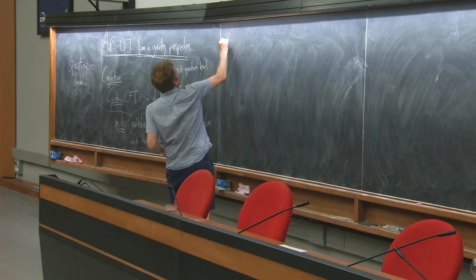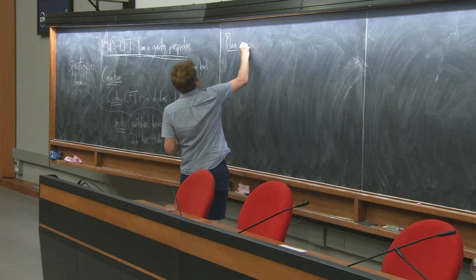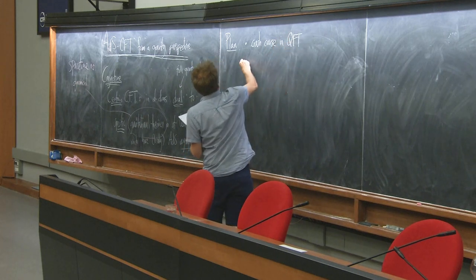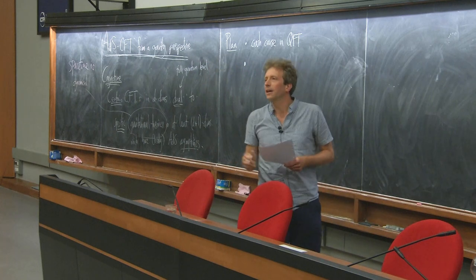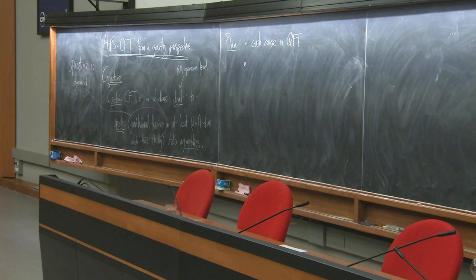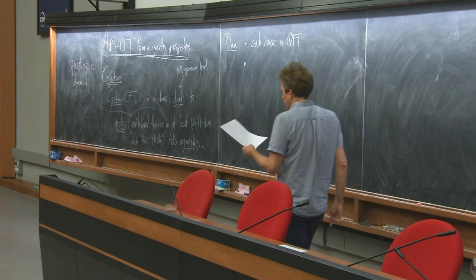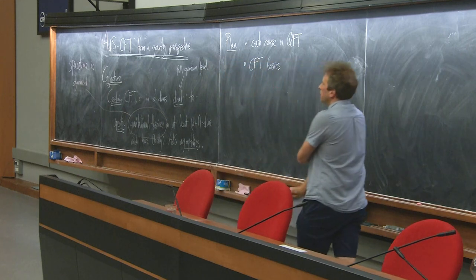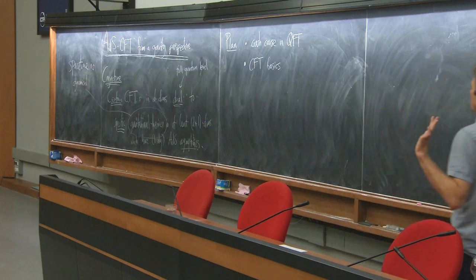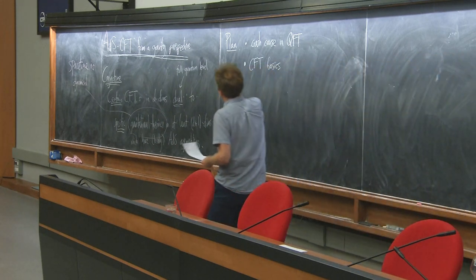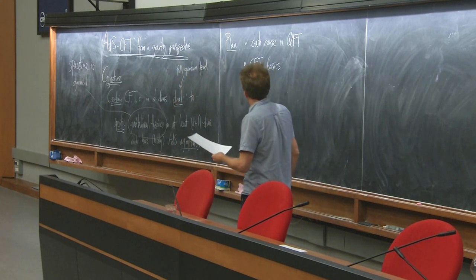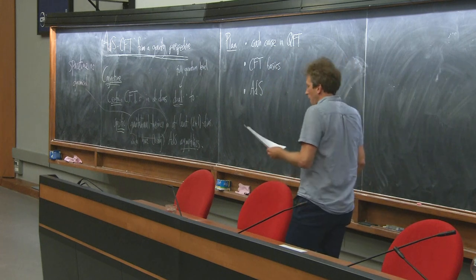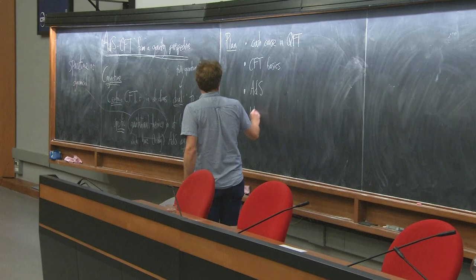A plan for what I'm going to say: I'm going to give a crash course in QFT, hopefully getting us on the same page in notation. Then I'll tell you some basics of conformal field theory that I'm going to need - just the very basics, enough to state more about this conjecture. Then I'll talk about what ADS spaces are, and then we'll talk about the AdS/CFT duality.